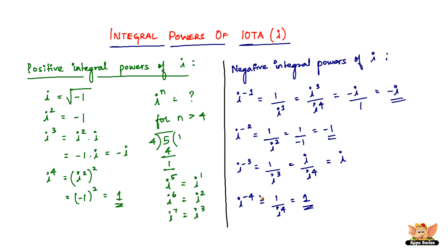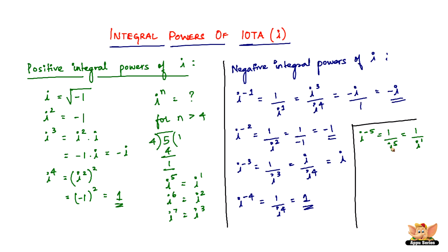What if the exponent is less than negative 4, such as negative 5 or negative 6? All you have to do is write it as 1 divided by I to the positive power. For I to the power of minus 5, write it as 1 divided by I to the power of 5, then divide 5 by 4 to get remainder 1, giving 1 divided by I to the power of 1. For I to the power of minus 6, write 1 divided by I to the power of 6; dividing 6 by 4 gives remainder 2, so it becomes 1 divided by I squared. This is how you solve negative integral powers of I, which requires knowing the basic rules of indices.